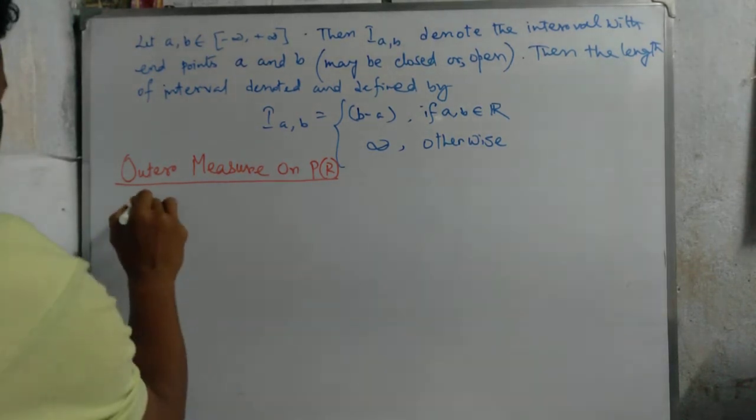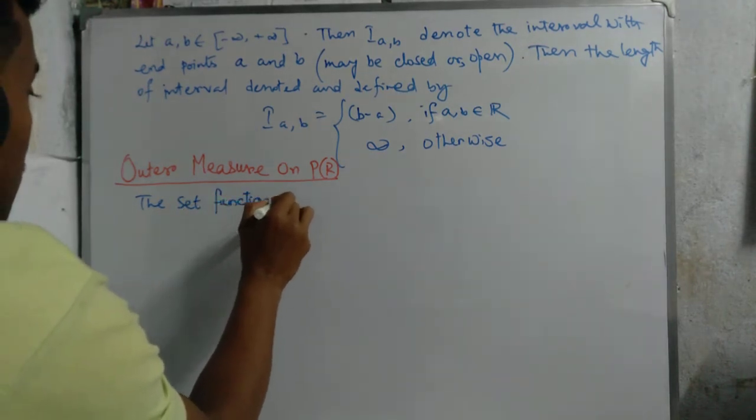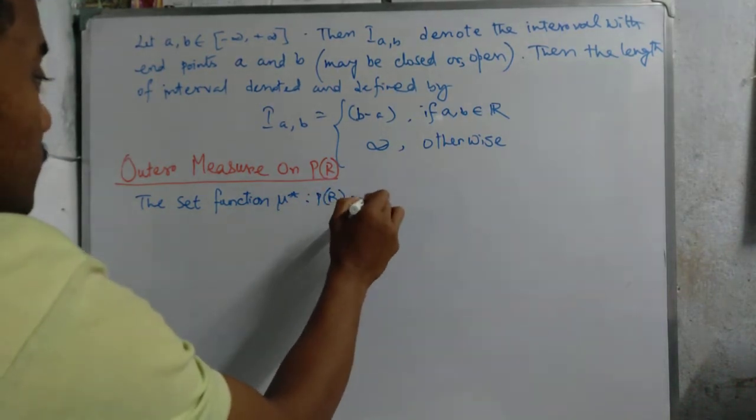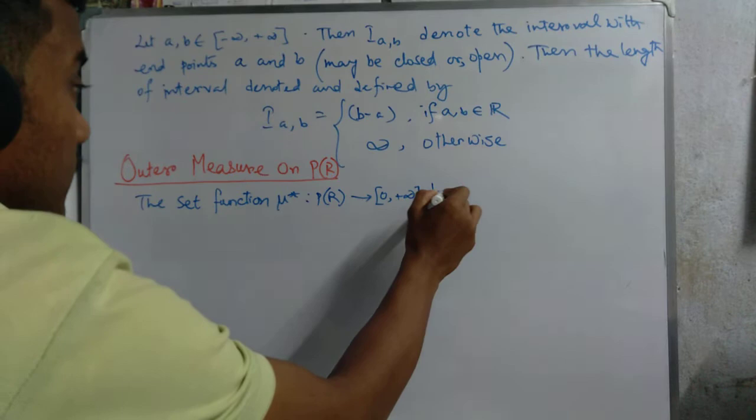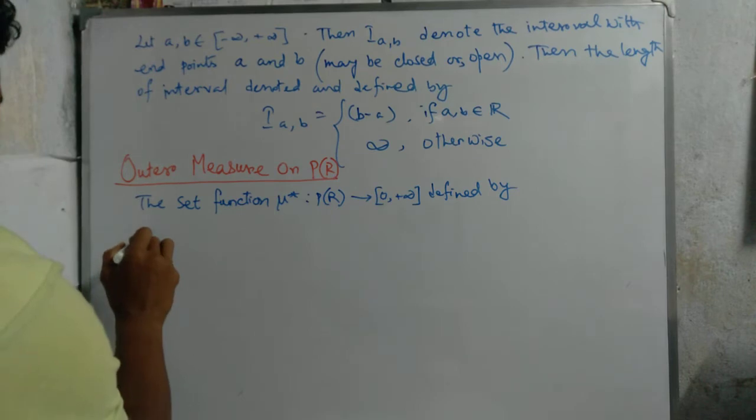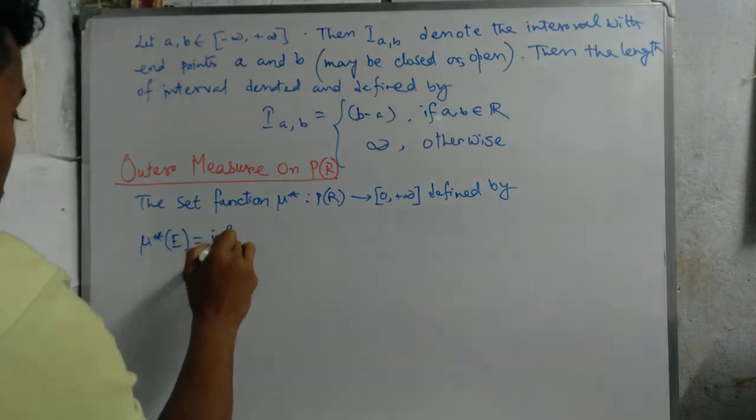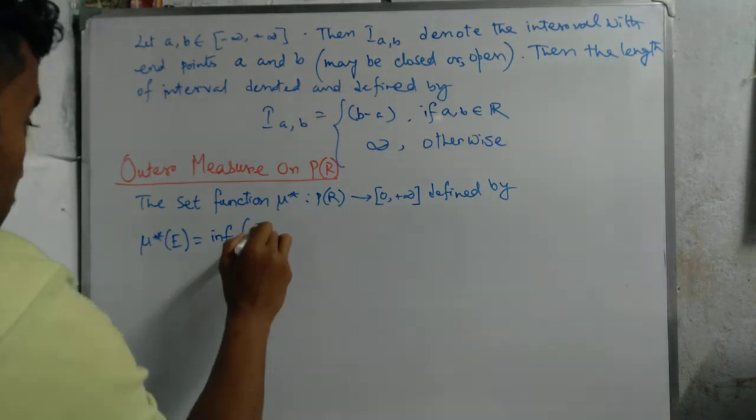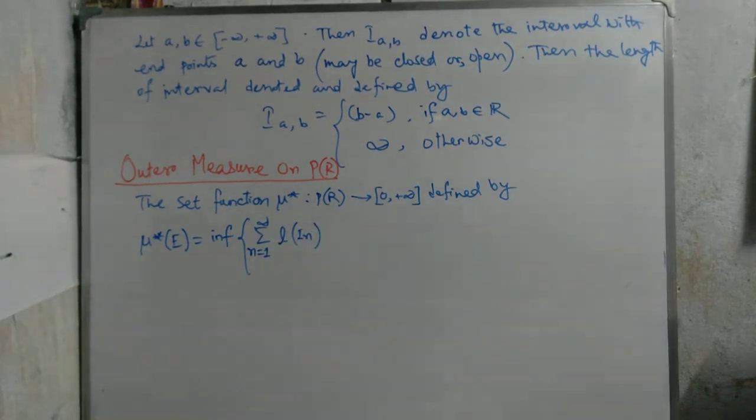The set function mu star: PR to [0, infinity) is defined by mu star E equal to the infimum of summation n equals 1 to infinity of L(I_n), where I_n is discussed here.